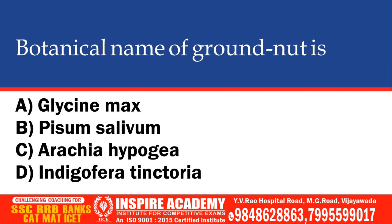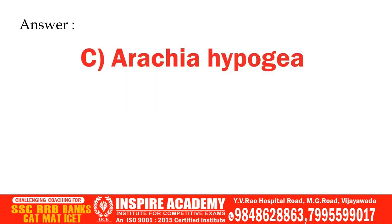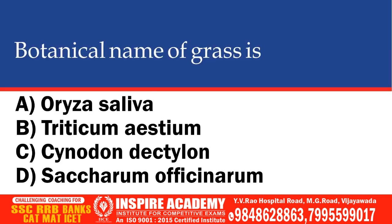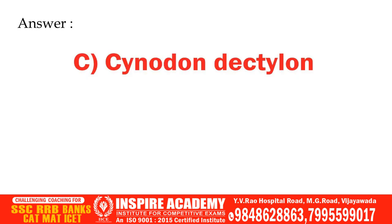Botanical name of grass is which of the following? Options: Oryza sativa, Triticum mastivum, Cynodon dactylon, Saccharum officinarum. The correct option is Cynodon dactylon.